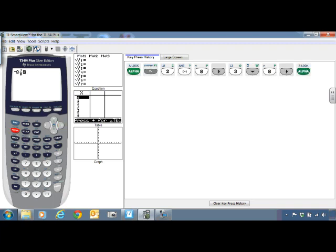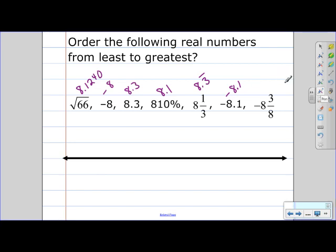And then alpha, y equals, again, this time option four, to convert our fraction to a decimal. So negative eight and three-eighths is negative eight point three seven five.